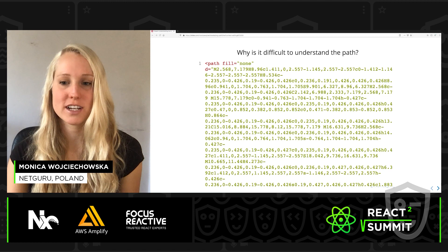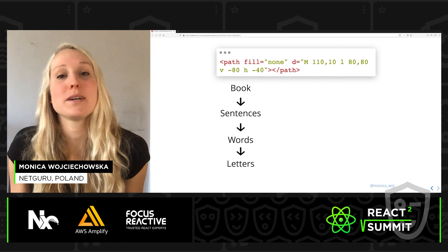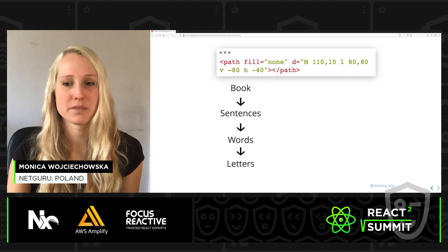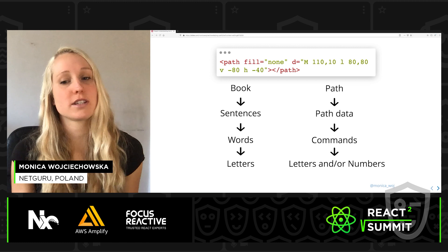So let's learn to read this language. When we learn to read a book, we don't start with the whole book but with its building blocks — the same goes for the path. Each path requires a path data attribute signified by D, which is essentially a set of instructions. It's chronological — we can read it from left to right, similar to reading a book. The path data is made up of different commands.